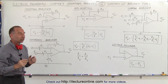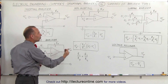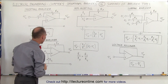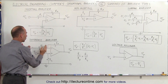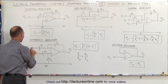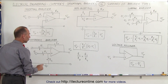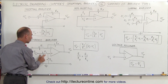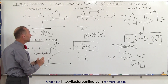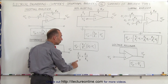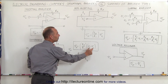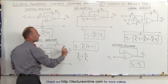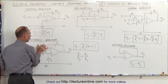Then we have the difference amplifier, where the output voltage is a ratio of the difference between V2 and V1, with the ratio determined by RF divided by R1. We have the feedback resistor RF connected to R1, which is the resistor connected to V1 at the inverting terminal. A second voltage V2 is connected to the non-inverting terminal with two resistors R3 and R4. The ratio of R3 to R4 must equal the ratio of R1 to RF. If so, the output voltage equals V2 minus V1 times RF/R1.